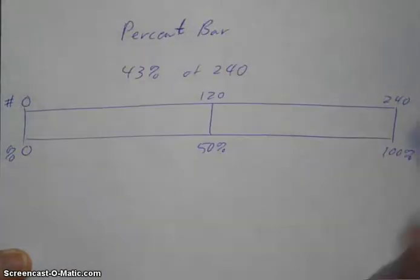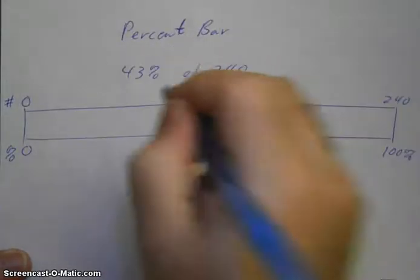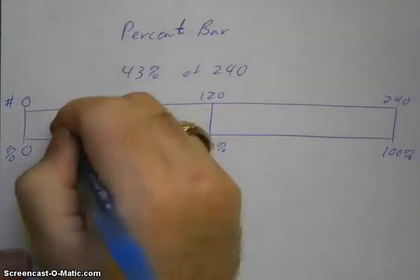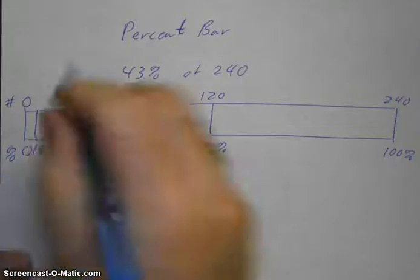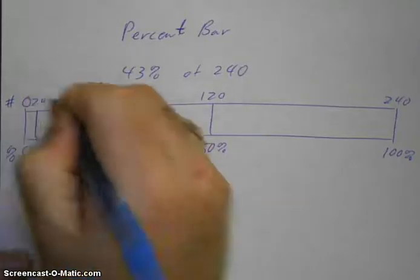I'm not going to worry about 25, well it would kind of help me. If I did 10% which is going to be down here somewhere, that's going to be 24. 1% is going to be 2.4.